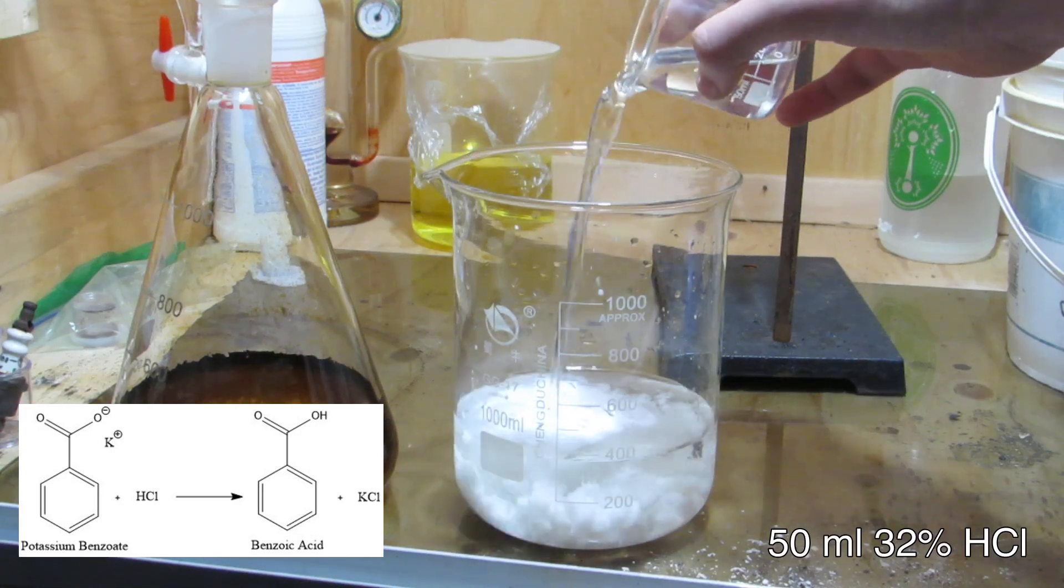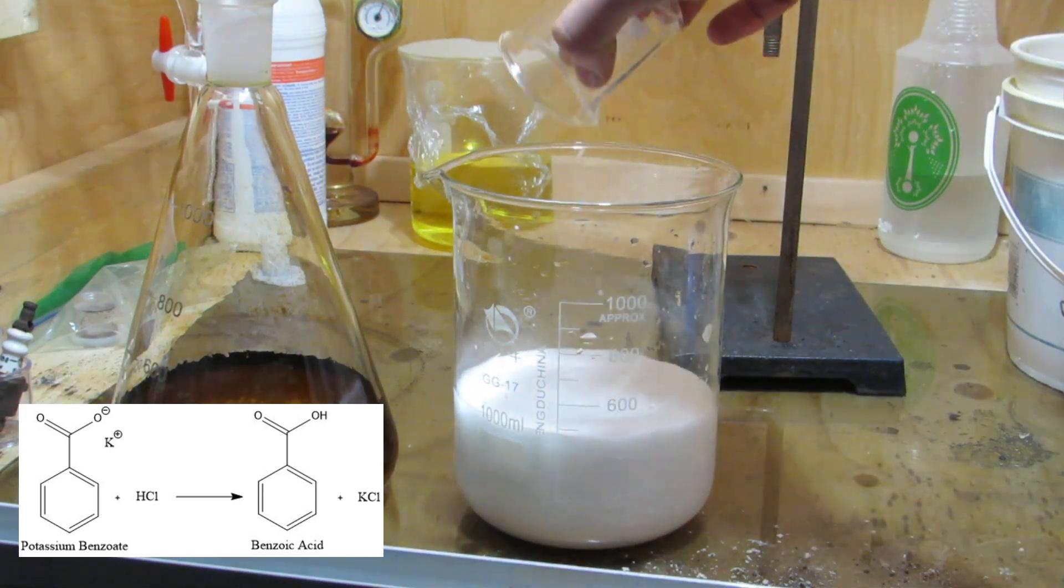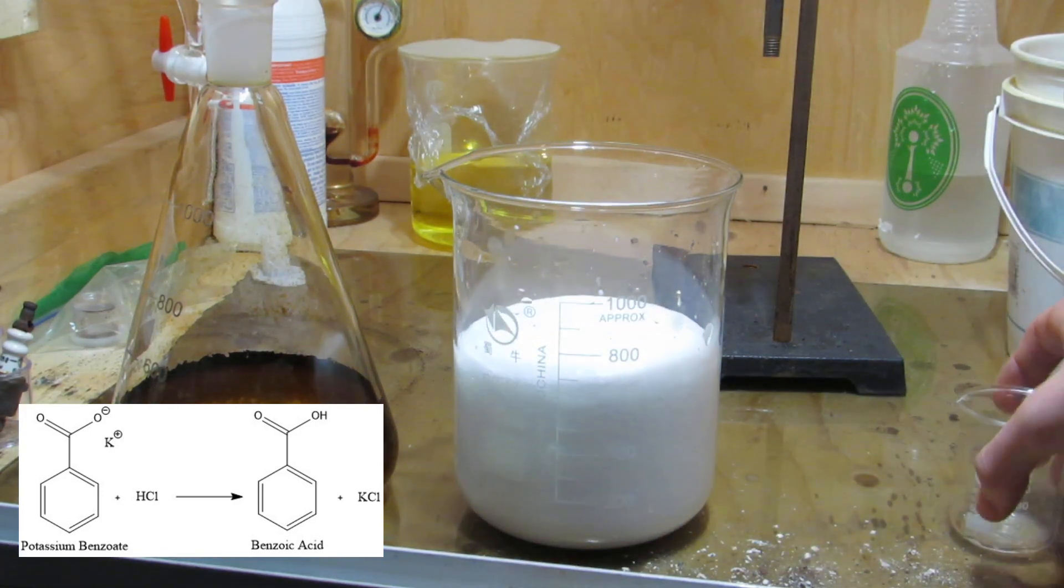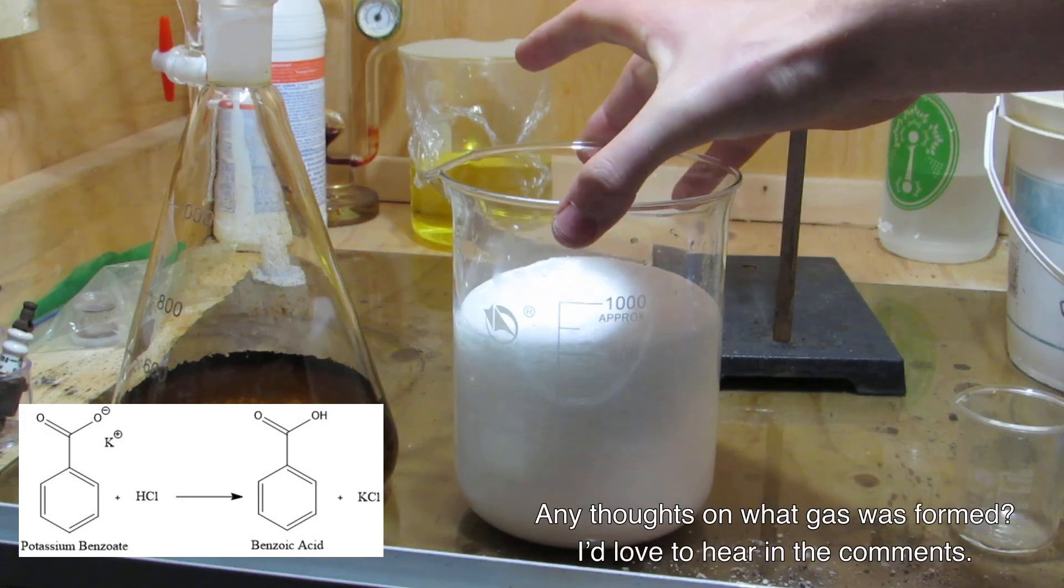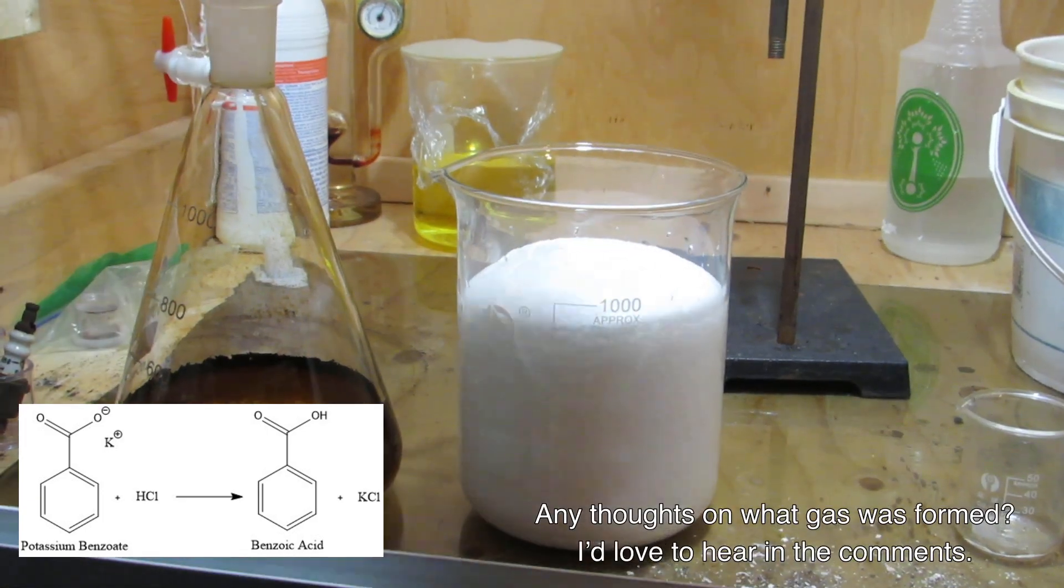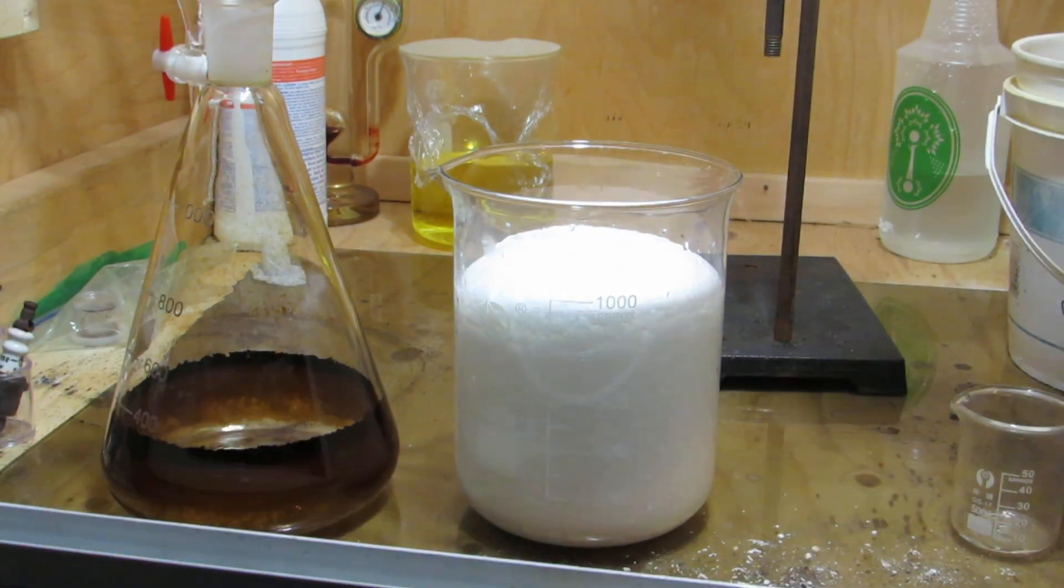This converted the potassium benzoate to benzoic acid. Concentrated hydrochloric acid can be purchased as muriatic acid from hardware stores. Surprisingly, this addition resulted in the formation of a gas, which was unexpected.